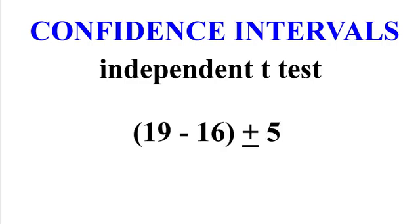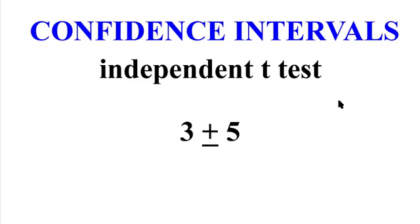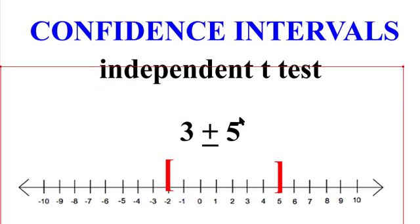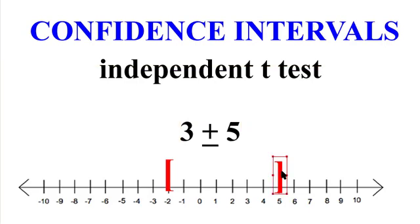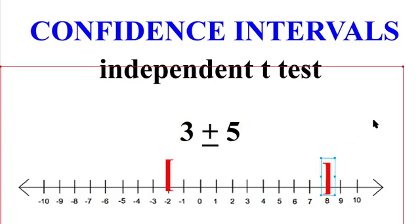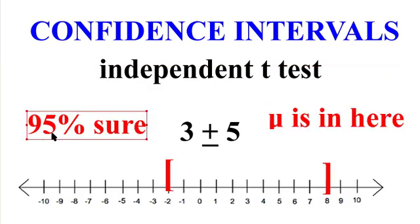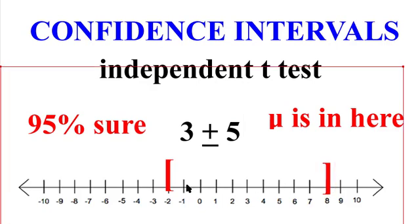So let's do an example. So we got the first mean is 19 and the second mean is 16 and the margin of error is a plus or minus 5. So that comes down to 3 plus or minus 5. Now, if we put that on a number line, 3 minus 5 is negative 2, and 3 plus a positive 5 is 8. So again, we're pretty sure, about 95% sure, that the true population mean is between negative 2 and positive 8. We think we're pretty sure that the difference between the two means is between those two brackets there.